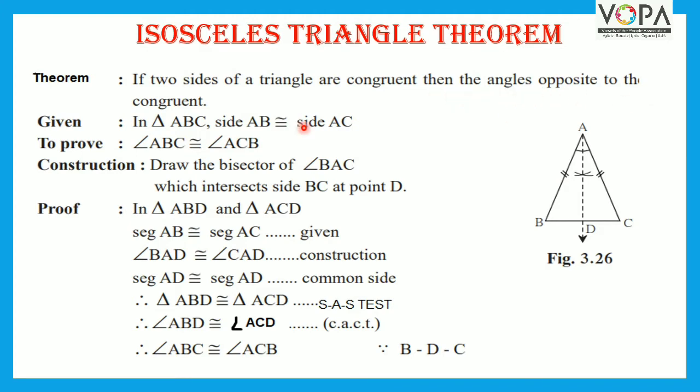then the angles opposite to them are congruent. Given, in triangle ABC, side AB congruent to side AC, which is shown here with this similar sign.